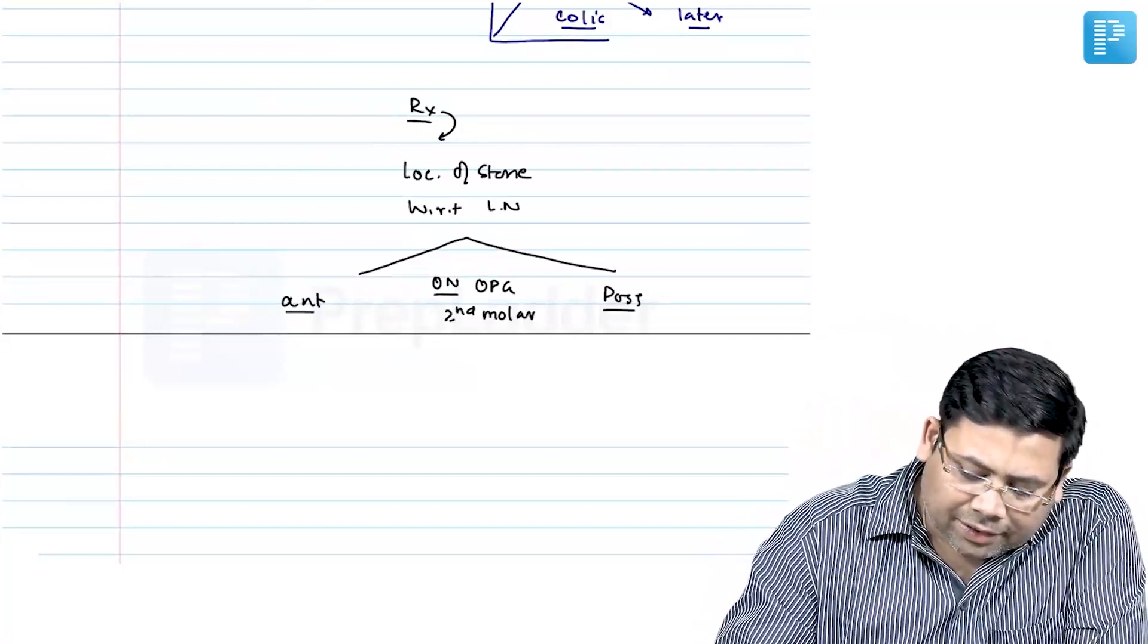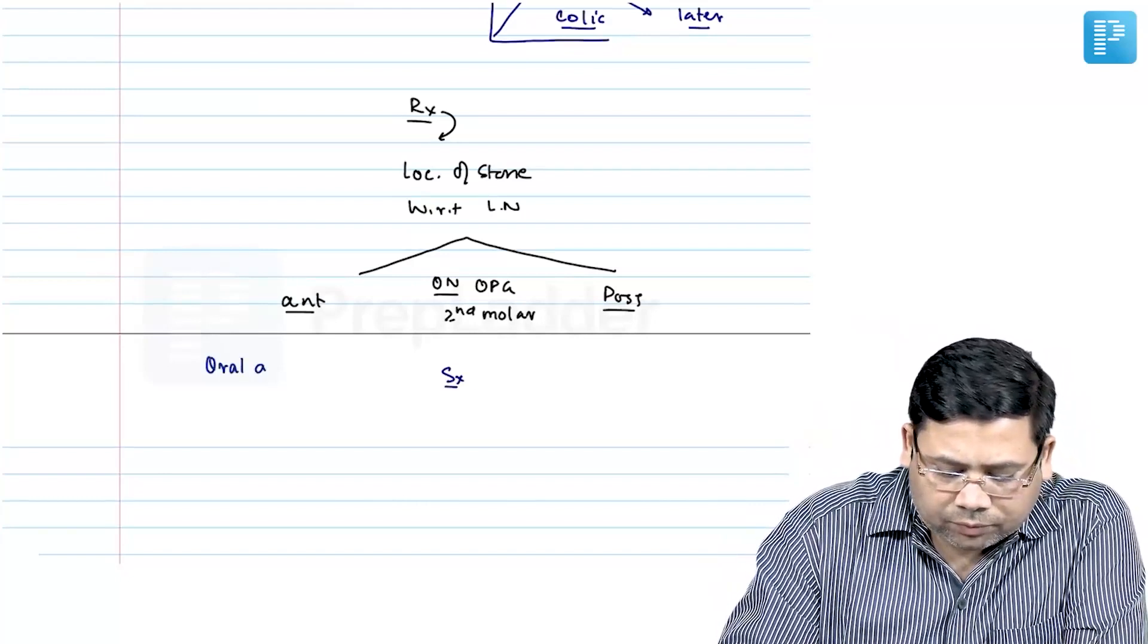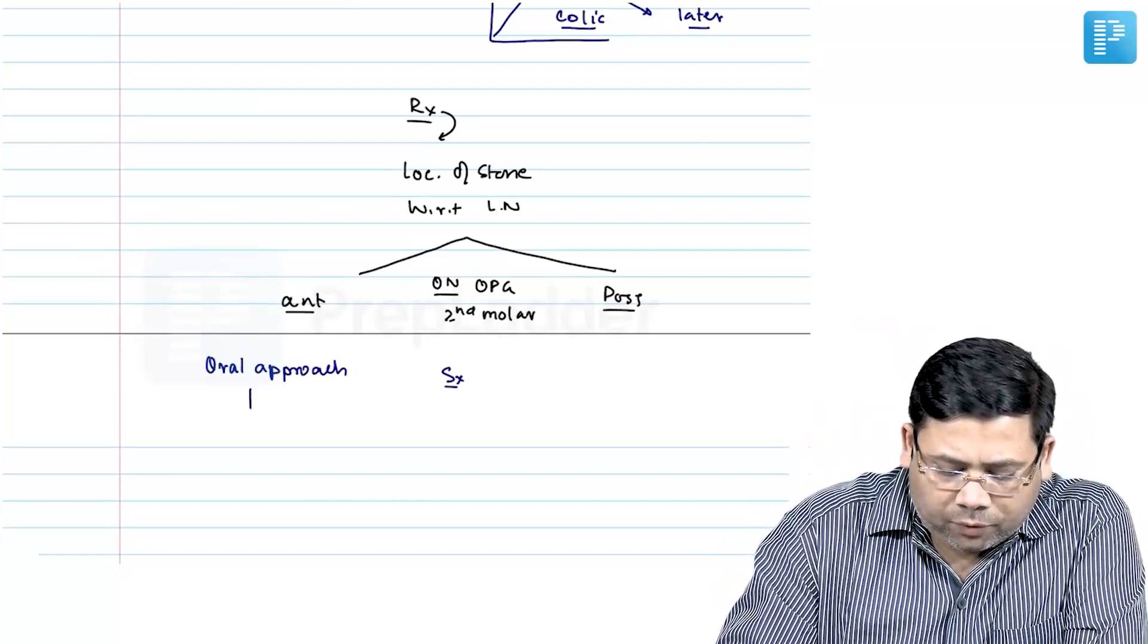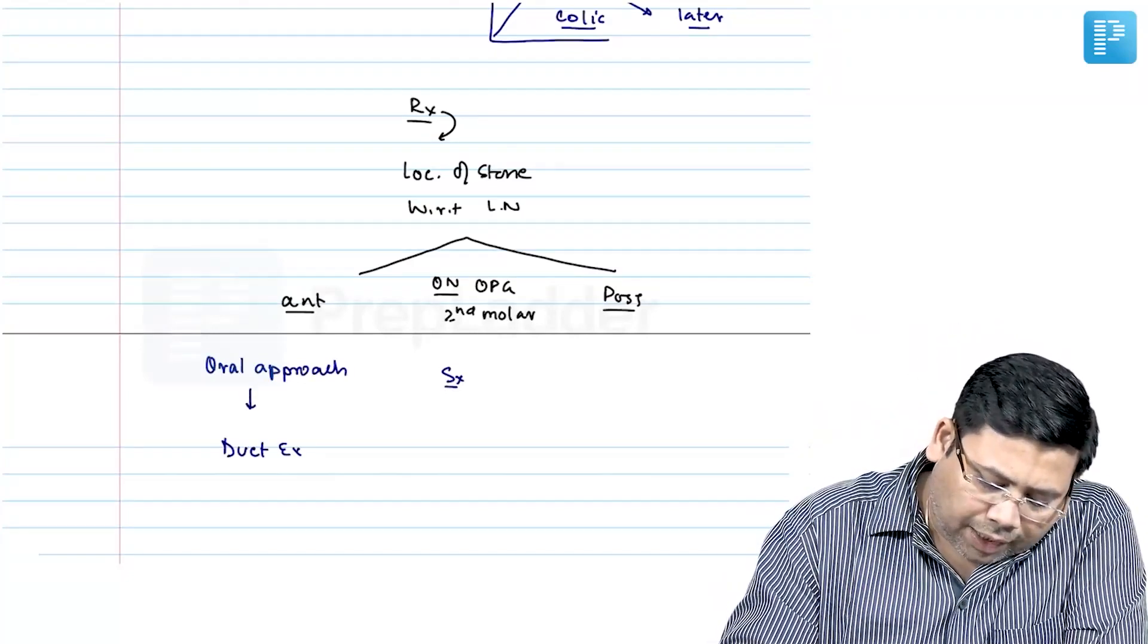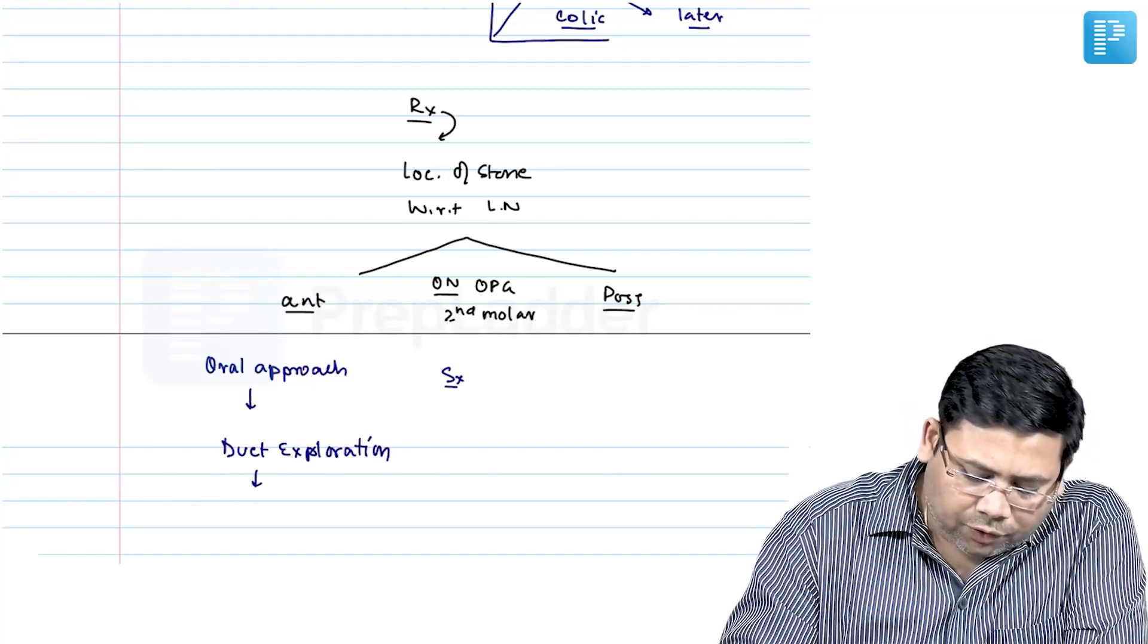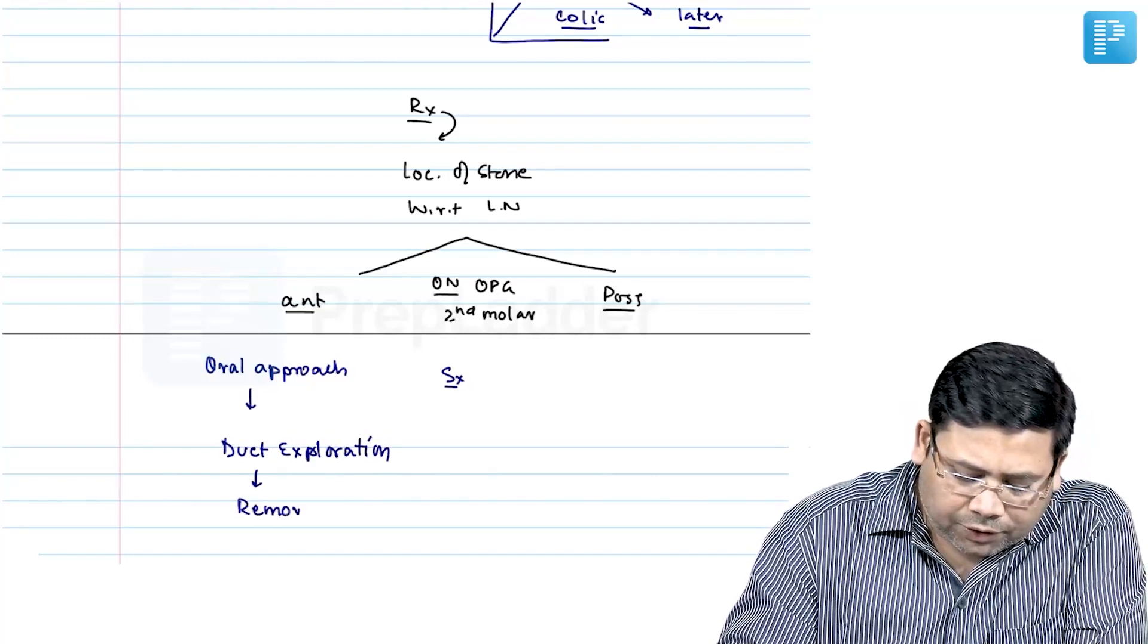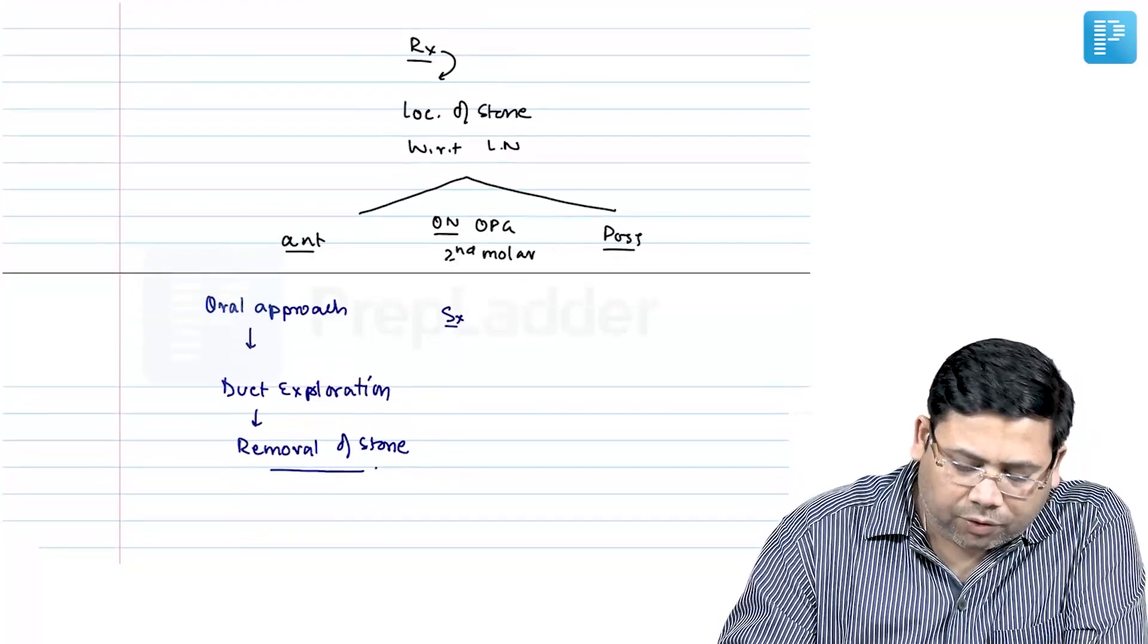So if it is anterior to this, what is the surgery that we use? We go for an oral approach. In an oral approach, we go inside, we do the duct exploration, and along with the duct exploration, we do removal of the stone. Duct exploration plus removal of stone, this is very important.